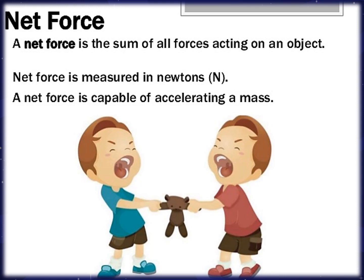Let's find out in what direction an object will go. This brings us to net force. A net force is the sum of all forces acting on an object, and it is measured in newtons. A net force is capable of accelerating a mass. Some other force acts on a body either at rest or in motion.